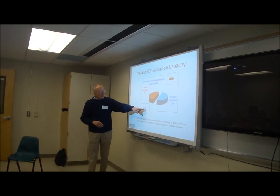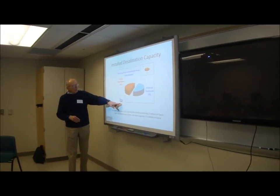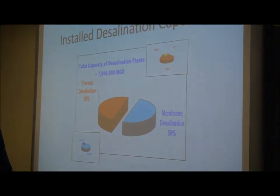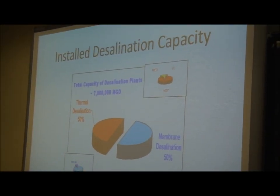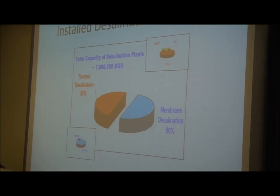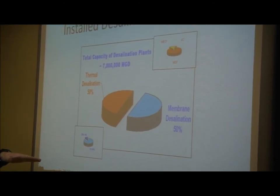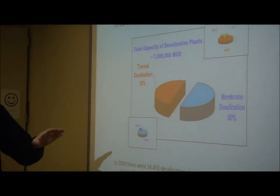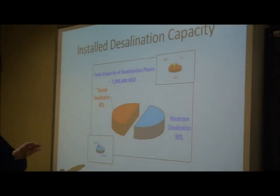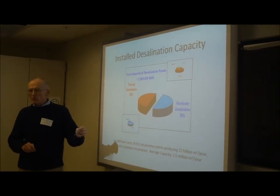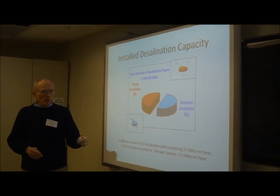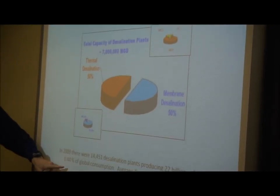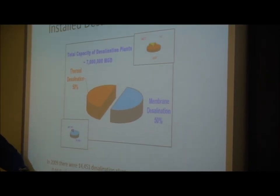In the membrane processes, reverse osmosis is much, much greater than either of the other processes. In 2009, there were almost 15,000 desalination plants worldwide, and they produced 22 billion cubic meters of fresh water or potable water per year — but that's less than half a percent of the total water consumed in the world.